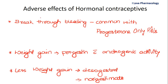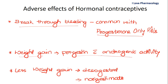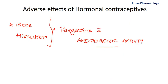Oral contraceptive pills increase the risk of breast carcinoma and cervical carcinoma, and at the same time reduce the risk of endometrial and ovarian carcinoma. The increased risk of breast and cervical cancer is mainly due to the estrogenic component, whereas reduction in endometrial and ovarian carcinoma is attributed to the progesterone component. Breakthrough bleeding is more commonly seen with progestin-only pills and is reduced with biphasic and triphasic pills. Weight gain is more common with progesterone having androgenic activity and less common with desogestrel and norgestimate. Acne and hirsutism are mainly due to progesterone with androgenic activity.